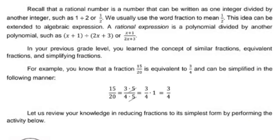For example, you know that the fraction 15 over 20 is equivalent to 3 fourths and can be simplified as follows: 15 over 20 equals 3 times 5 over 4 times 5. Cancel out 5, so you have 3 fourths times 1, which equals 3 fourths.